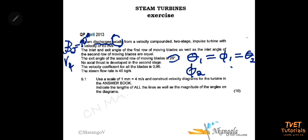No axial thrust is developed in the second stage. Remember that axial thrust can also not be developed in the first stage; in this case they are specifically saying it's not developed in the second stage. When no axial thrust is developed it means that vf3 equals vf4 — the two flow velocities at the second stage are equal.